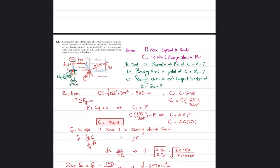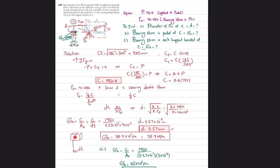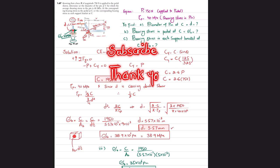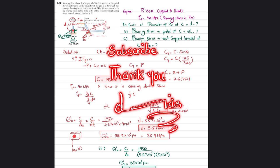So the bearing stress in each bracket at point C is 35 megapascals. That covers all of problem 1.67. I hope you are enjoying my videos and learning from them. If you're new to my channel, subscribe and press the bell icon to get notifications about my latest videos. If you have any questions, let me know and I'll try my best to answer. Thank you for watching.